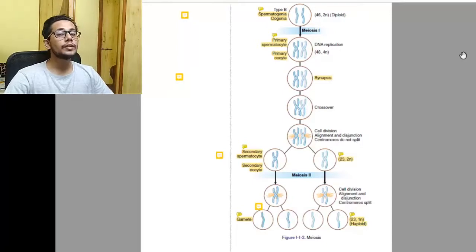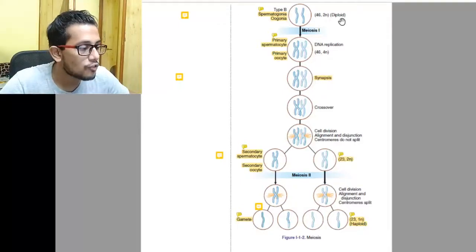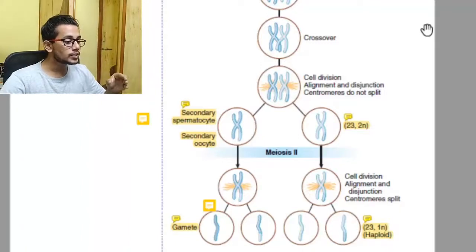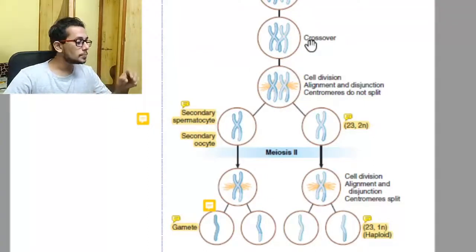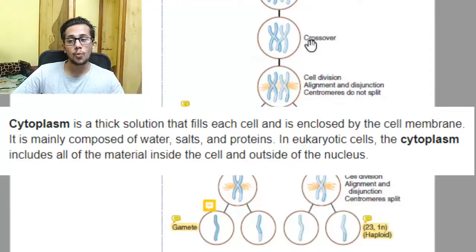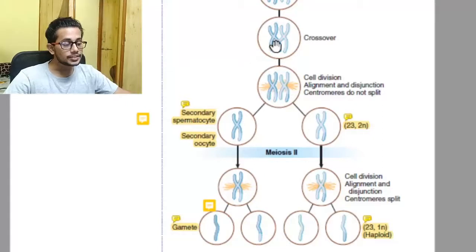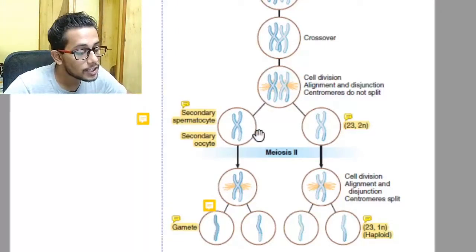Going through the diagram a second time, we'll learn how meiosis differs in males and females. The process is the same — 46 chromosomes, 2N diploid, DNA replication, synapsis, crossover, cell division — up until the secondary spermatocyte and secondary oocyte stage. An important thing to notice: let's assume the dark blue portion of the cell represents the cytoplasm — everything outside the nucleus, including mitochondria, Golgi bodies, and other organelles.